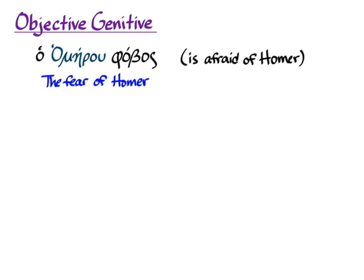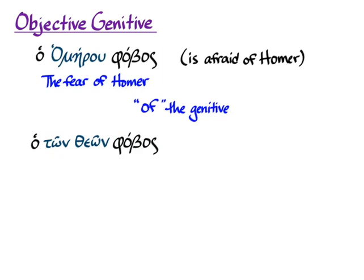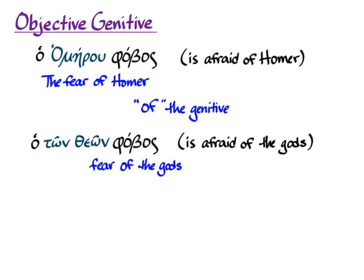It's a little more obvious in some other contexts, and 'of' with the genitive still works here. Ho tōn theōn phobos as an objective genitive would be 'fear of the gods' — perhaps the fear of the gods kept the people under control. As you can see, you can simply translate it 'of,' that default translation with the genitive, and have it mean exactly what you expect it to mean in English.